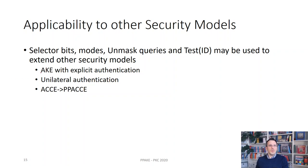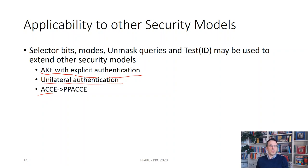Viewing these building blocks — the unmask query and new per-session state information — as ingredients, we might also apply them to other security models, for example authenticated key exchange with explicit authentication, the ACCE model, or models that focus on unilateral authentication. They may be adapted and applied there as well. The emphasis is on having strong cryptographic independence between these security properties.